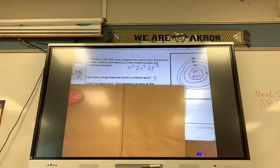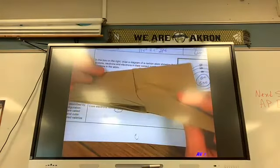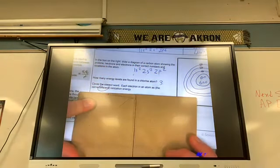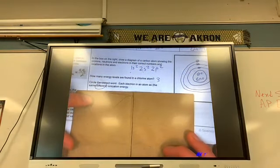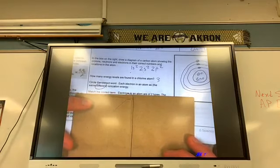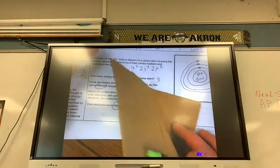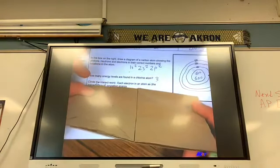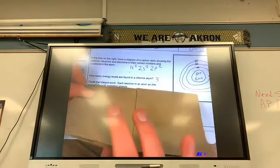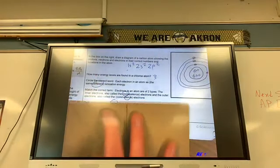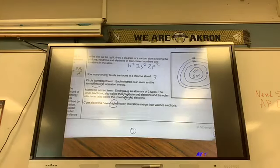Circle the correct word. Each electron in the atom has a different ionization energy. Because some are spinning up, some are spinning down, some are paired, some are not paired. Electrons in the atom are of two types. Inner electrons, also called the core, and the outer electrons called the valence. Core electrons have a higher ionization energy. Why? Because they're closer to the nucleus, which means we're about to talk about what? Shielding. Trends.